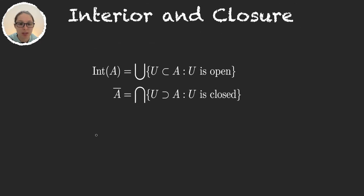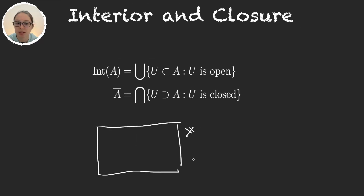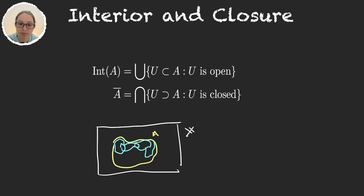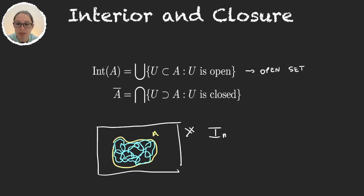Let's make a drawing. If we have our topological space X, there are obviously a lot of open sets. Let's say that this set here is A. The interior of A will be the union of all the open sets that are contained within A. Because it's an arbitrary union of open sets, it is itself an open set, and it's a subset of A because all of those sets are subsets of A.